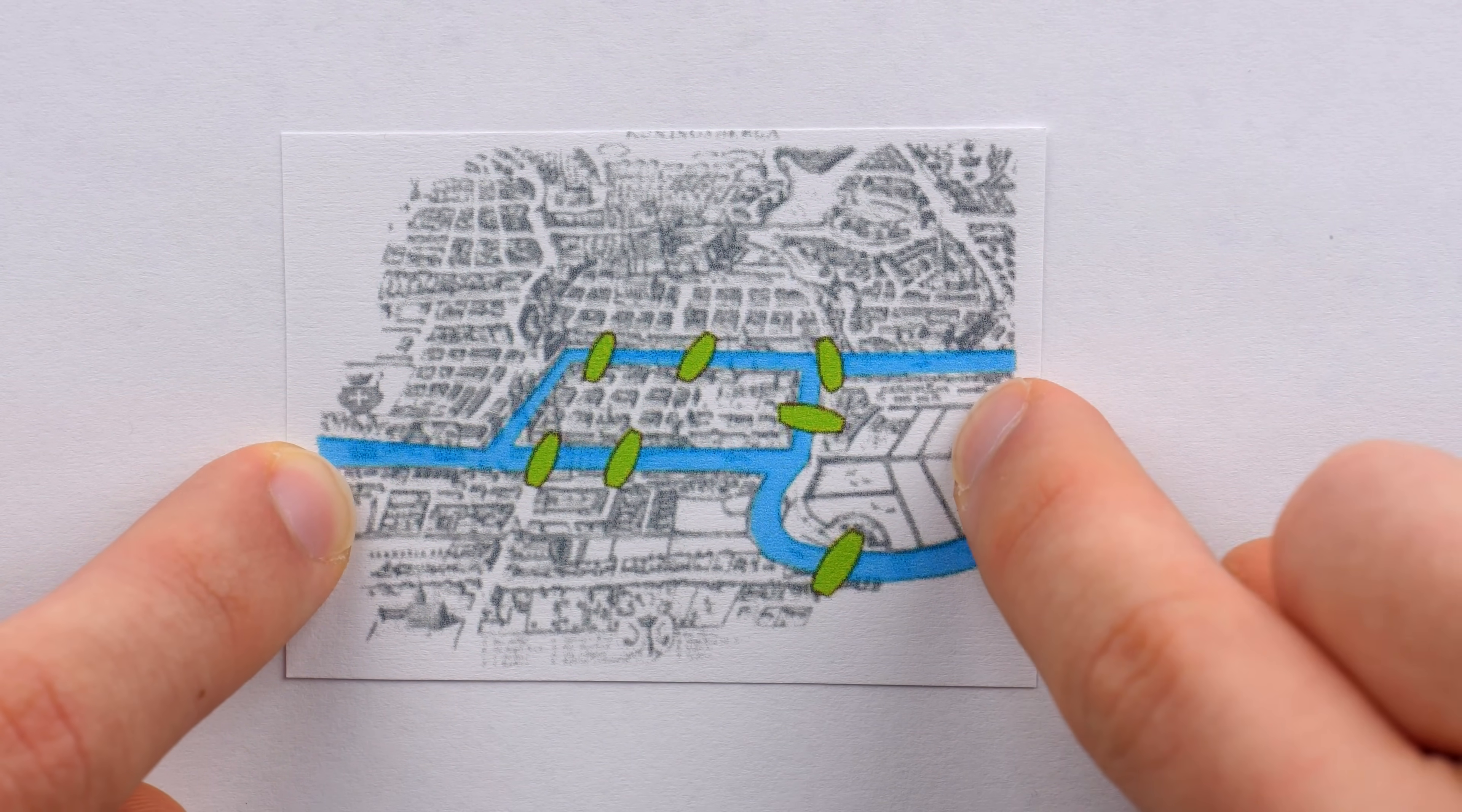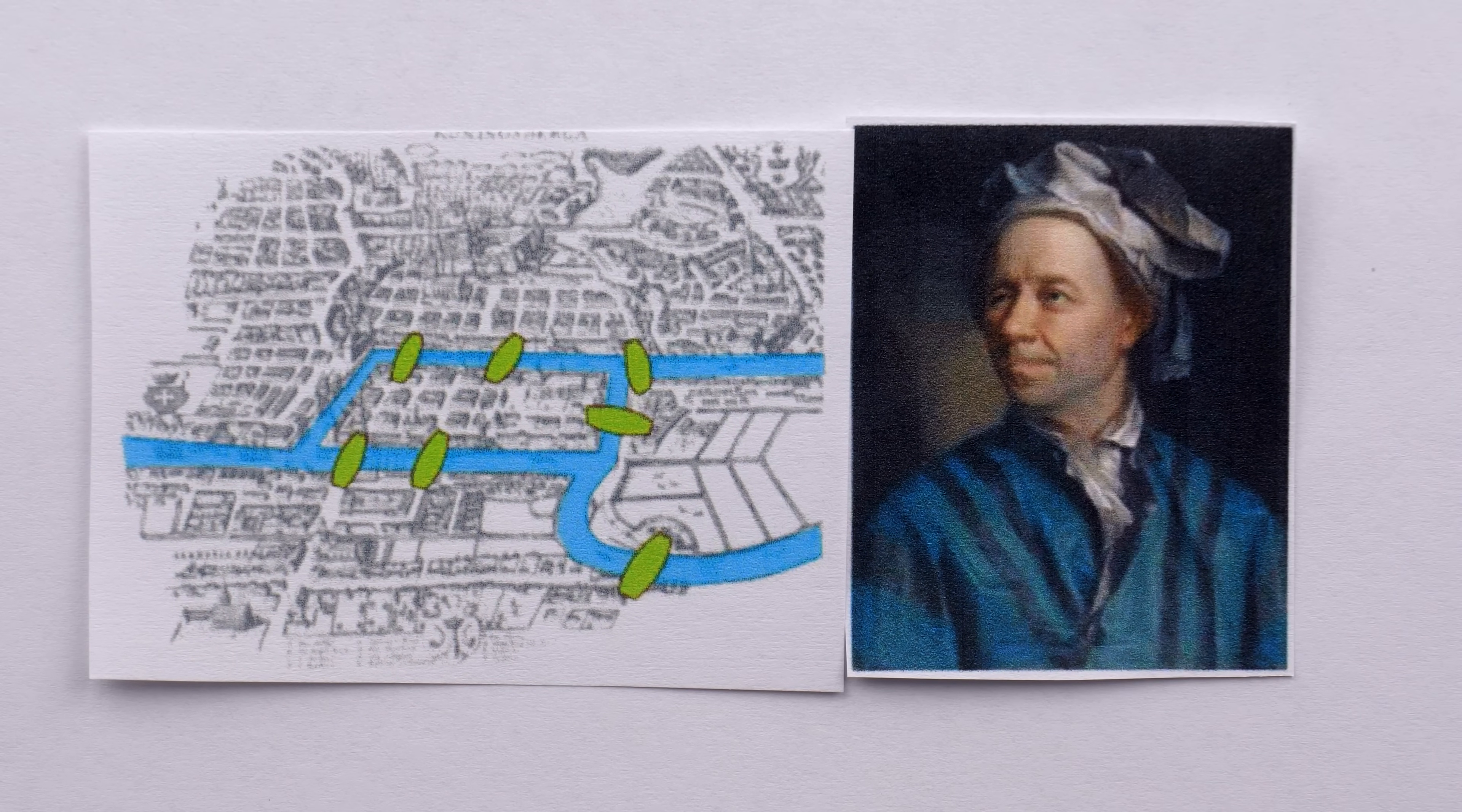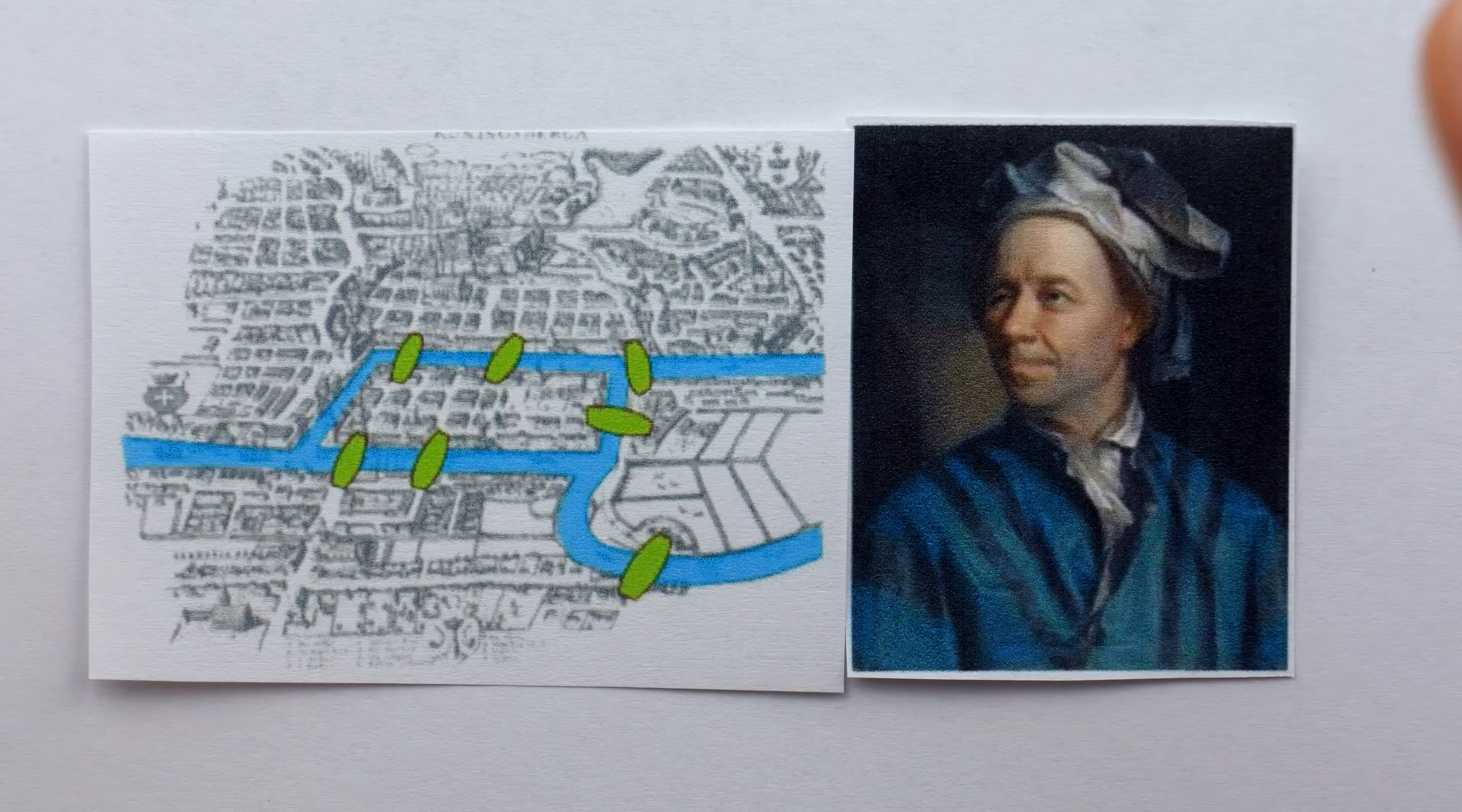Some began to wonder if it was possible to have a walk around the city where you cross every bridge exactly once and start and end at the same spot. In 1736, one of the greatest mathematicians of all time, Leonard Euler, solved this problem. Many people view his solution as laying the foundation for graph theory and topology.